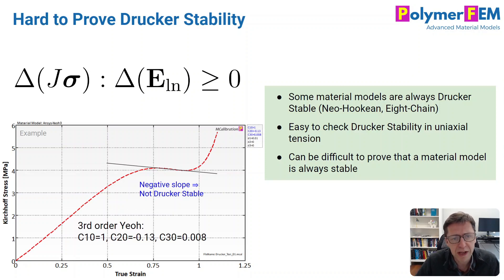It's kind of easy to explain, actually. If you plot a Kirchhoff stress, which is one of the stress measures that one can define as a function of true strain, then the stress strain curve may look like the red here. And this is the prediction in this example for the Ansys-Yeoh model with the parameters shown here. If this stress strain curve is monotonically increasing as the strain increases, then under these conditions, this material model, in this case the Yeoh model, is Drucker stable.